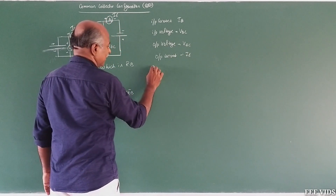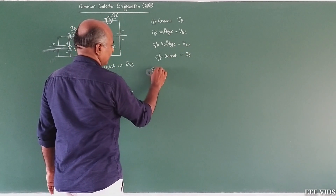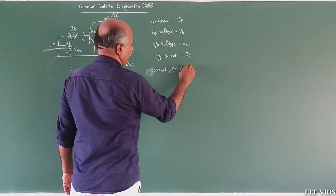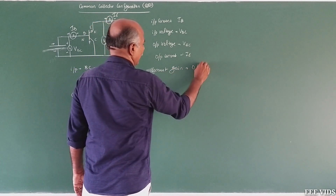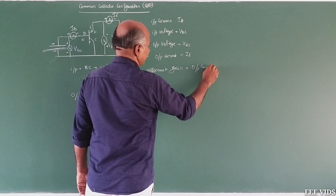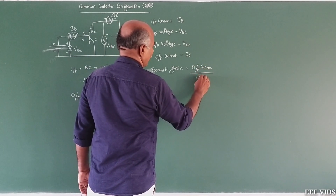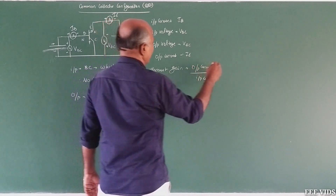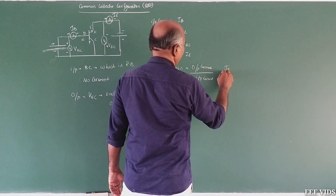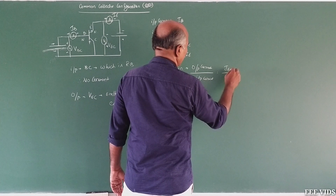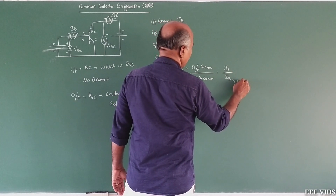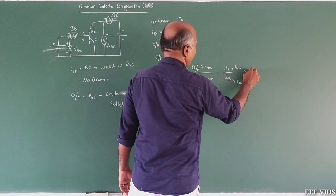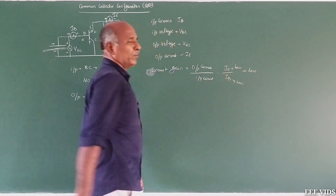Current gain is output current divided by input current. Here the output current is IE and the input current is IB. So the current gain is low. Because the forward bias current is low, the overall current gain is low.